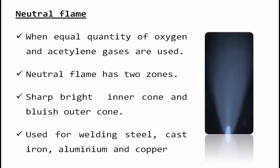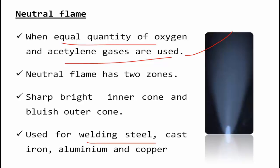In the neutral flame, oxygen and acetylene gas are mixed in equal proportions — 50% oxygen and 50% acetylene. When we need to join steel, cast iron, aluminium, or copper, we have to prefer mixing the gases in equal proportions.